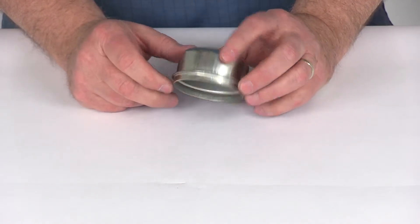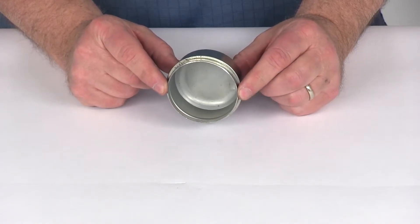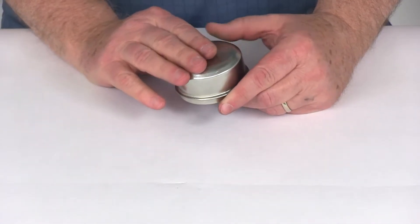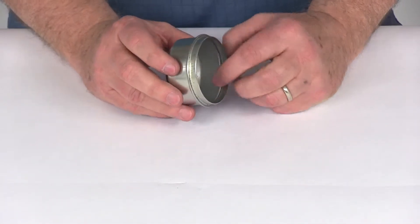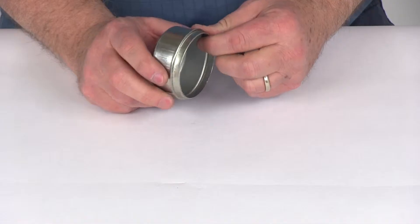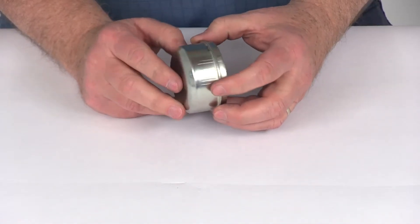Now this grease cap will fit trailer hubs with the 2.446 inner diameter and has a corrosion resistance zinc plating. It is 22 gauge steel construction and it is a drive-in or tap-in installation.